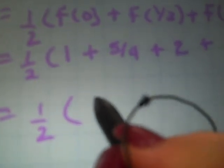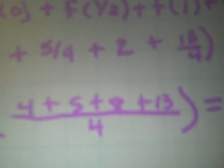And to sum that all up, that's 4 plus 5 plus 8 plus 13, all over 4, which is 1 half times 30 fourths, which is 15 halves, square units.